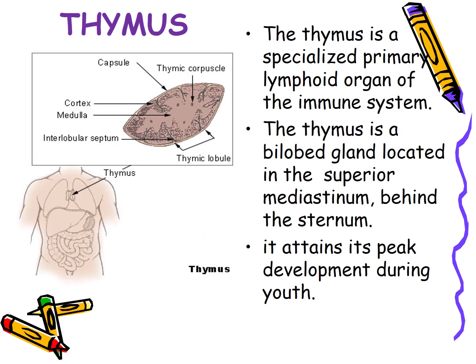The thymus gland is a bilobed gland located in the superior mediastinum behind the sternum. It is a specialized lymphoid organ related to the immune system. It attains its peak development during youth, and histologically it consists of two lobes, each lobe made up of an outer cortex and inner medulla.